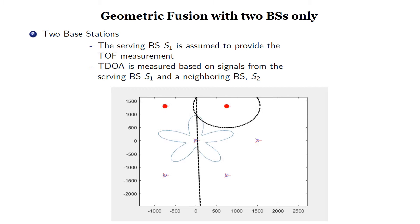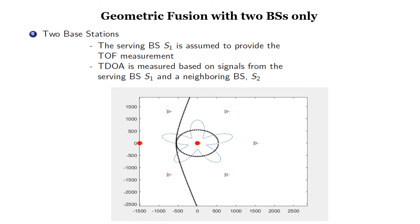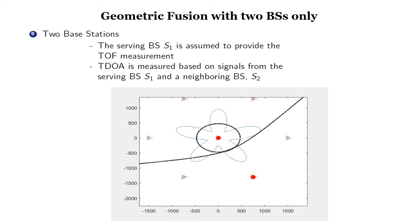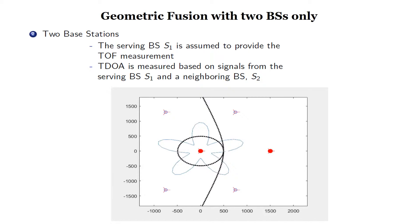Traditionally, positioning is considered to be enabled when the mobile provides measurements of three different base stations. The second scenario investigates positioning based on time series of time-of-flight and time-difference-of-arrival measurements gathered from two base stations only. In this case, the serving base station provides the time-of-flight measurement, but the TDOA is measured based on signals from the same serving base station and the neighboring most favorable one.